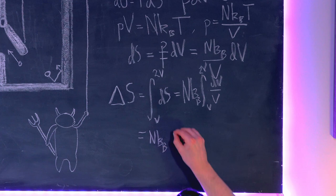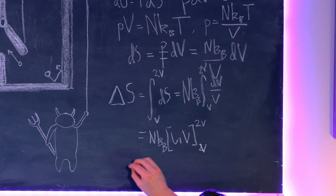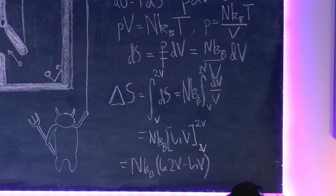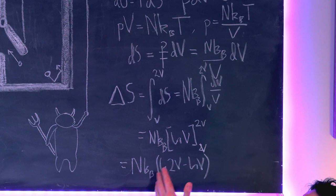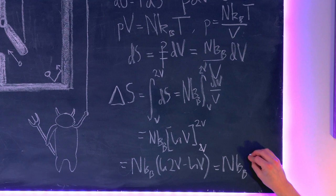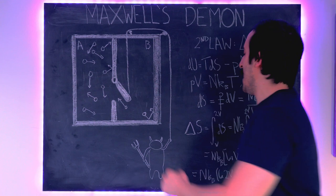That's equal to n kb—ln of 2V minus ln of V. When you have two logarithms like this, that's the same as saying ln 2V minus ln of V is exactly the same as saying ln of 2V divided by V. So the V's cancel and then you get that is equal to n kb ln of 2.